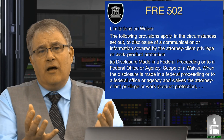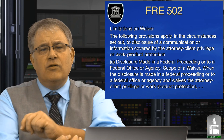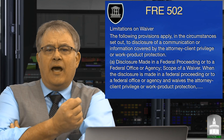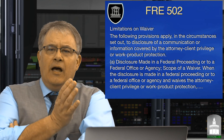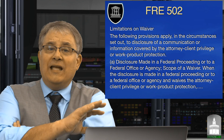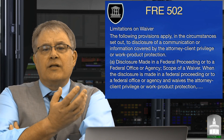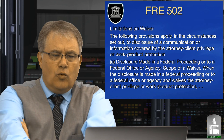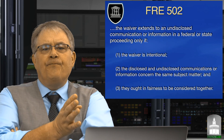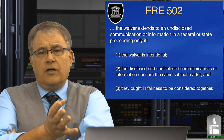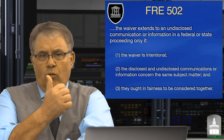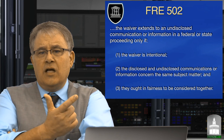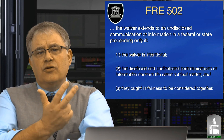Waiver means I've waived the right of attorney-client privilege and work product and given you the information — maybe because it's required in discovery. When disclosure is made in a federal proceeding, we look at the scope of the waiver. The waiver extends to undisclosed communication or information only if it was intentional and the disclosed and undisclosed information contain the same subject matter, and in order for them to be understood, they have to be considered together.